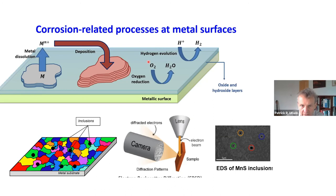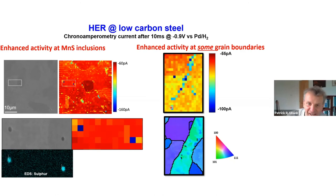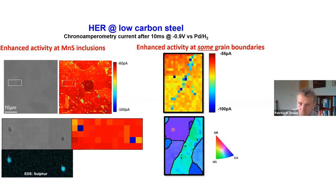This is work from Lewis Yule. Here's an SEM image after an experiment where you can look at all the droplets. Within the scan area there were two inclusions, and those inclusions show enhanced activity. He was also able to show that certain grain boundaries have enhanced activity, while other grain boundaries are basically electrochemically silent compared to the surrounding grains. So we can really start to pinpoint where the active sites are that will drive the corrosion reaction.